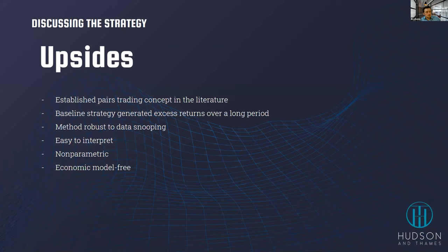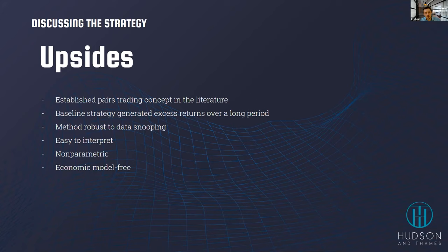The upsides of the distance strategy: it established the pairs trading concept in the literature — the most cited landmark paper that started the whole research industry. The baseline strategy generated excess returns over a long period, over 40 years. It's robust to data snooping since you take the whole universe of stocks without tweaking for a particular backtest. It's easy to interpret: if the spread diverges, expect it to return to equilibrium. It's non-parametric — using two sigma with no additional input parameters — and economic-model-free, so there are no misspecification issues.